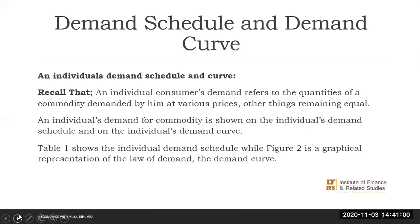Demand refers to quantities of a commodity which are being demanded at various prices over a period of time, other things remaining the same. So the quantities that an individual consumer demands — that would be an individual demand. We show individual demand on an individual demand curve or an individual demand schedule.